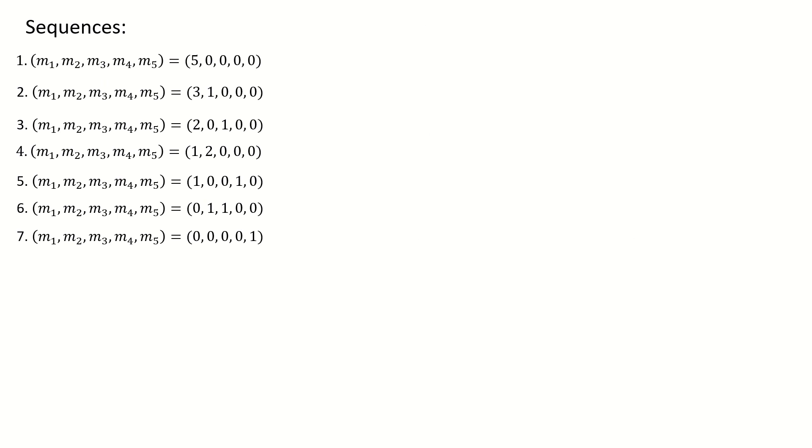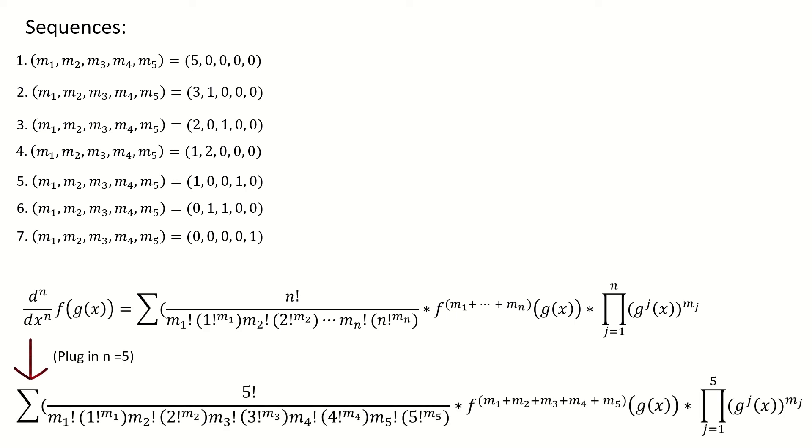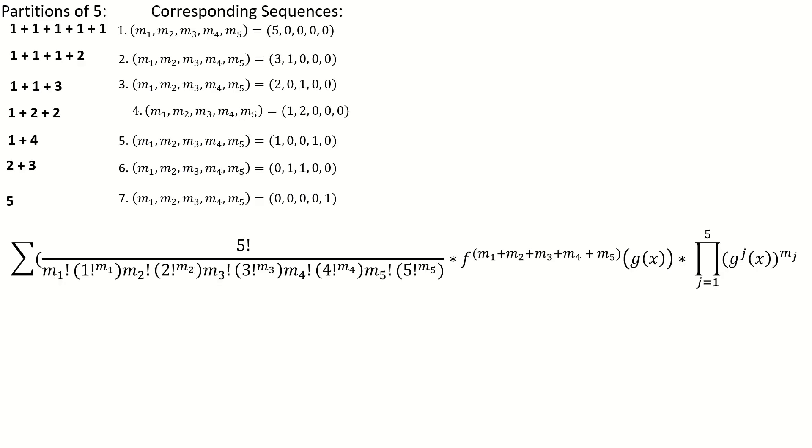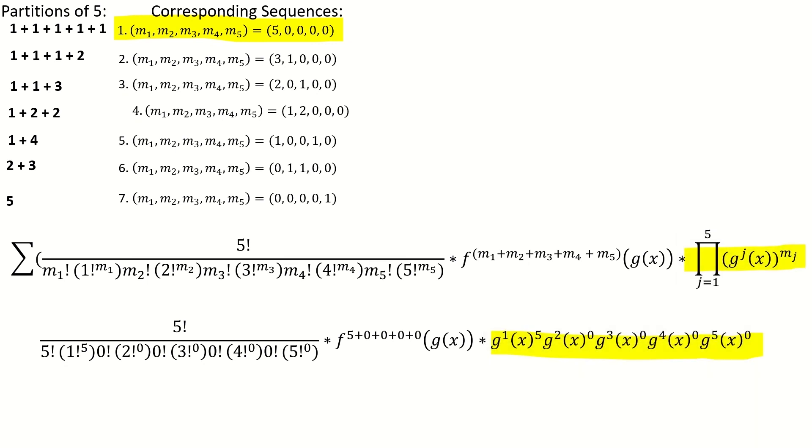So now that we have our sequences, let's work through each sequence and substitute the numbers m1 through mn in each sequence into Faa di Bruno's formula, remembering that n equals 5 as we're finding a fifth derivative. Here's the first summand, using the sequence m1 equals 5, m2 equals 0, m3 equals 0, m4 equals 0, and m5 equals 0.